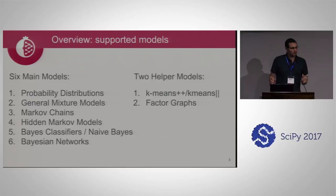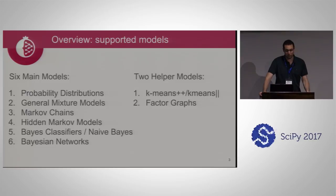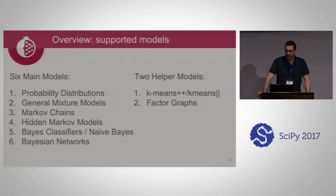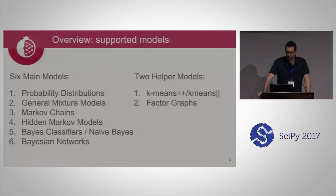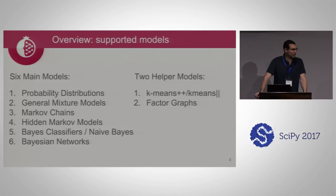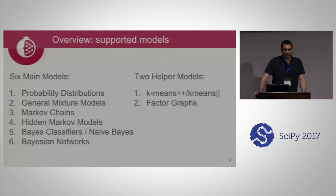Pomegranate has six main models that it currently covers, and two supporting models that help support these. The first are very basic probability distributions — things like normal distributions, uniform distributions and the like. Next are mixtures of these distributions, then Markov chains over sequences, hidden Markov models which are latent factor models for sequences, Bayes classifiers which are an extension of the more commonly known Naive Bayes classifier, and then Bayesian networks which are very flexible probabilistic inference techniques.